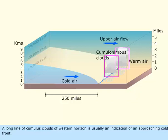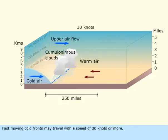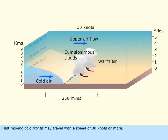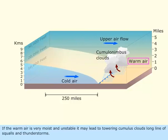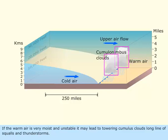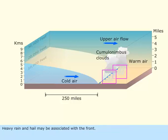A long line of cumulus clouds on the western horizon is usually an indication of an approaching cold front. Fast-moving cold fronts may travel with a speed of 30 knots or more. If the warm air is very moist and unstable, it may lead to towering cumulus clouds, a long line of squalls, and thunderstorms. Heavy rain and hail may be associated with the front.